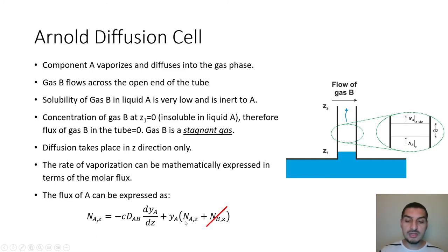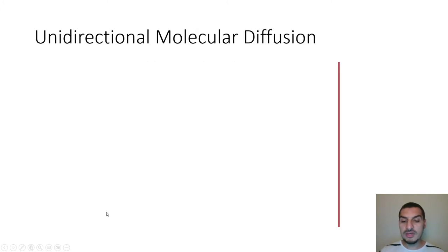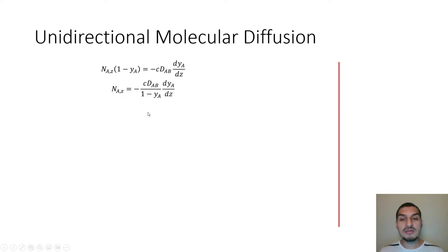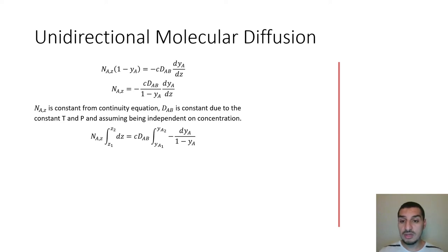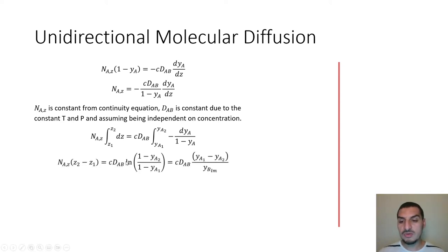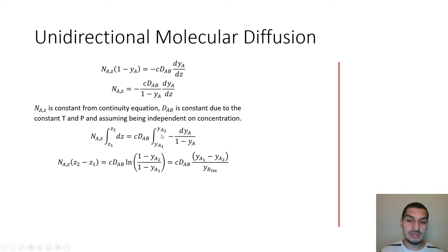The flux expression is N_Az = −c·D_AB·(dy_A/dz) + y_A·(N_Az + N_Bz). Since B is stagnant, N_Bz = 0. We can factor out N_Az and rearrange to express it as a function of y_A. This is a straightforward equation to integrate: N_Az is constant, and under constant temperature and pressure, c and D_AB are also constants. Integrating, dz gives z₂ − z₁, and −1/(1−y_A) integrates to ln(1−y_A). Applying the boundary conditions gives the integrated flux equation.